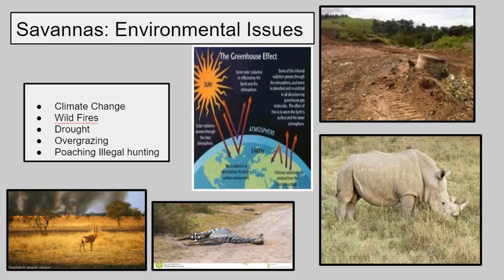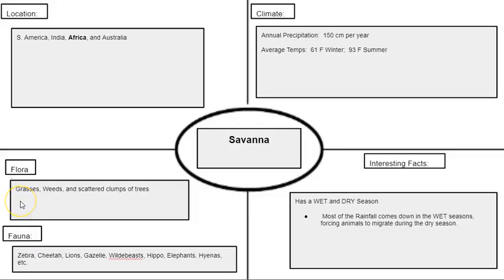Other animals that are going to be poached include rhinos and elephants. Elephants are hunted for their big tusks because their tusks contain ivory, which is very valuable. Rhinos are poached for their horns — in some cultures, rhino horns are used as medicine, so they are poached and killed just for this small piece to put into their medicine.